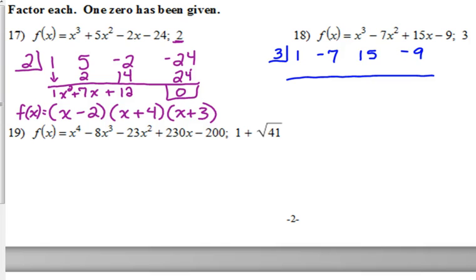So 1, negative 7, 15, and negative 9 are our coefficients. Bring down the 1. Multiply, we get 3. Add, we get negative 4. Multiply, we get negative 12. Add, we get 3. Multiply, we get 9. Add, we get 0, which we're supposed to, because 3 is one of our zeros.